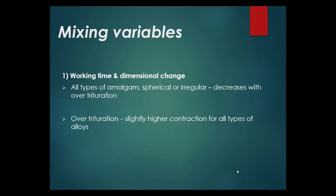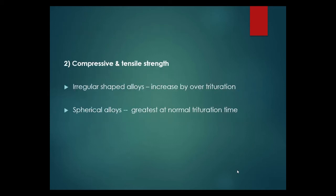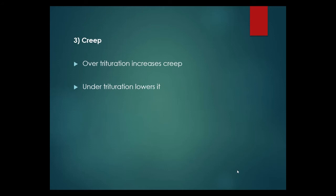Mixing variables — working time and dimensional change: all types of amalgam, spherical or irregular, decrease working time with over-trituration, with slightly higher contraction for all types of alloys. Compressive and tensile strength: for irregular-shaped alloys, strength is increased by over-trituration; for spherical alloys, strength is greatest at normal trituration time. Creep: over-trituration increases creep, while under-trituration reduces it.